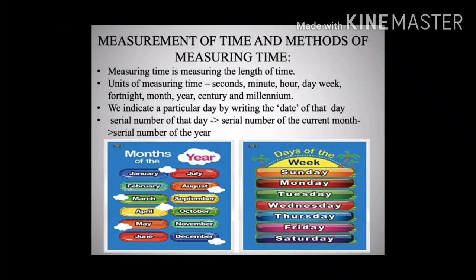There are various methods of measuring time in different parts of the world. The common or Christian era is the most widely used. We generally indicate a particular day by writing the date, which consists of the serial number of that day, followed by the name or serial number of the current month, and then the serial number of the current year.